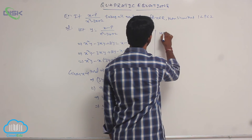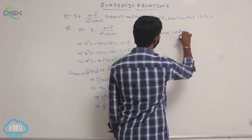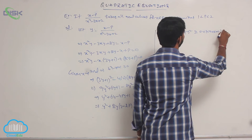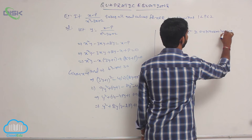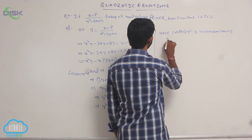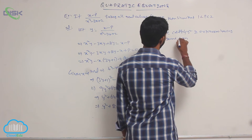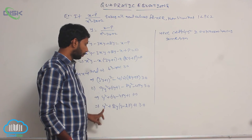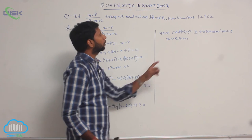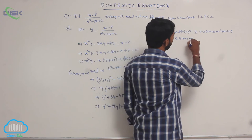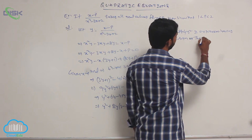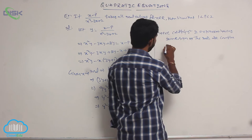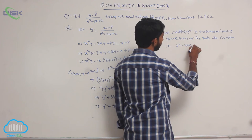Here, the coefficient of y squared in the expression has the same sign. The coefficient of y squared is 1, which is positive, and the expression is positive. Therefore the roots of the equation are complex, meaning b squared minus 4ac is less than 0.